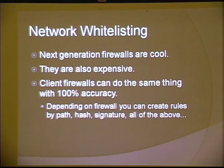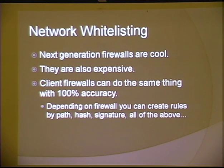So let's say everything Aaron talked about just fails miserably. Let's say people can bypass that stuff, there's an exploit, someone finds a way around AppLocker. You have other ways to complement your AppLocker policy. We're going to look at network whitelisting from the host level. Next generation firewalls are really cool — they have lots of new rules, features, and detections — but they're also very expensive and have long break-in periods. Client firewalls can do a lot of the same stuff network-based or next-gen firewalls can do, with pretty good accuracy.